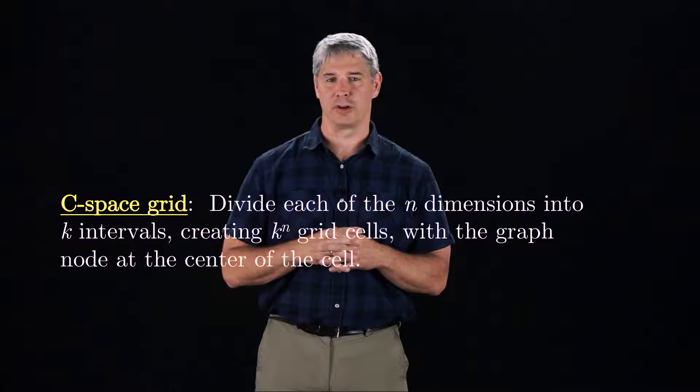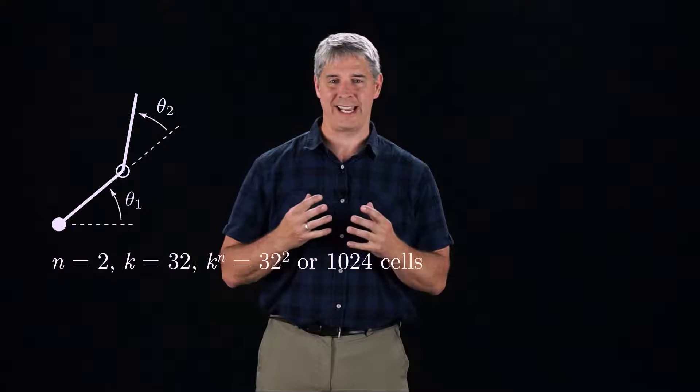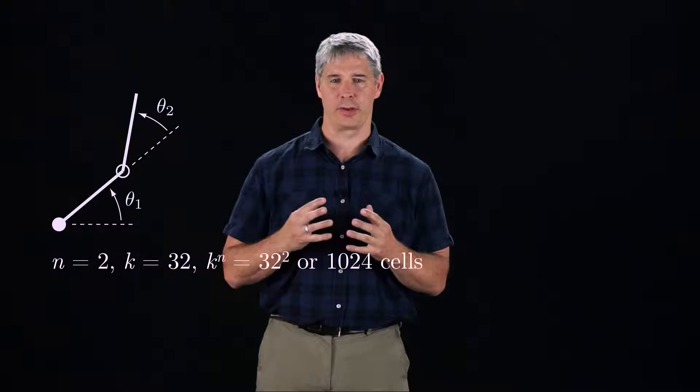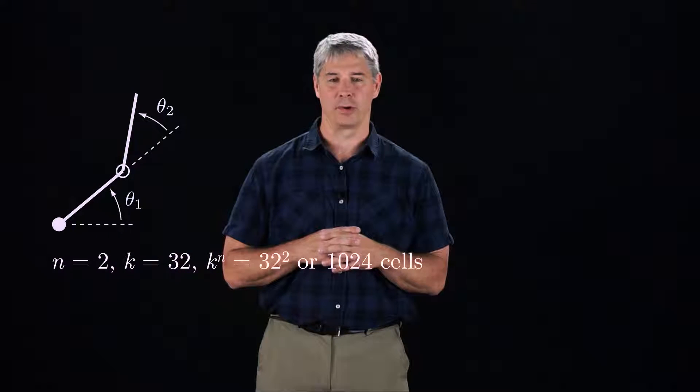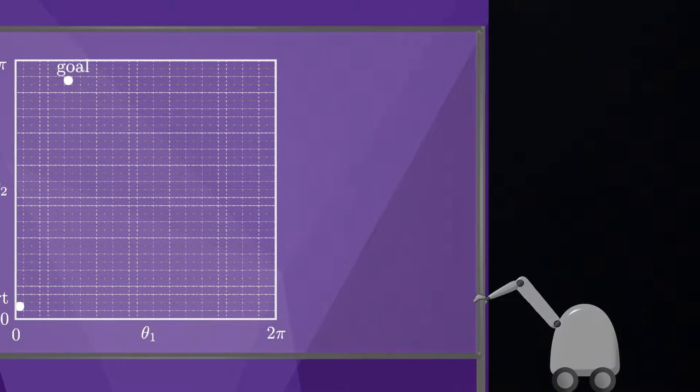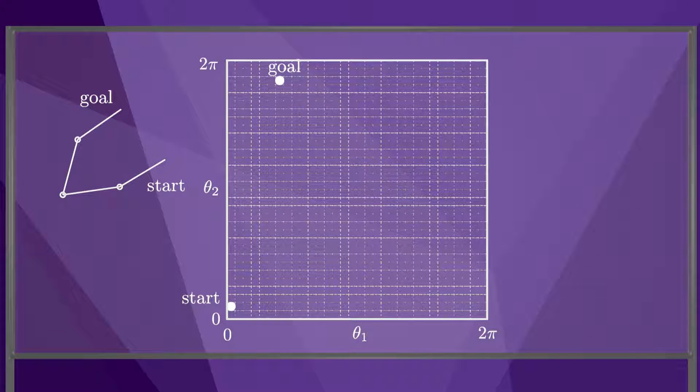For example, for a 2R robot, if we choose k equal to 32, then there are 32 squared or 1024 grid cells. Let's draw the start and goal configuration on this grid.